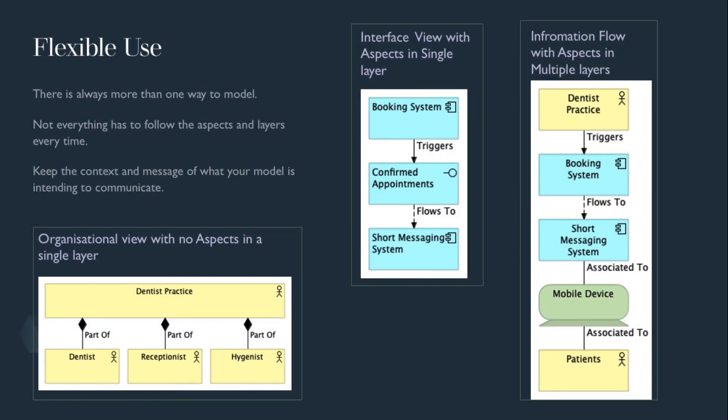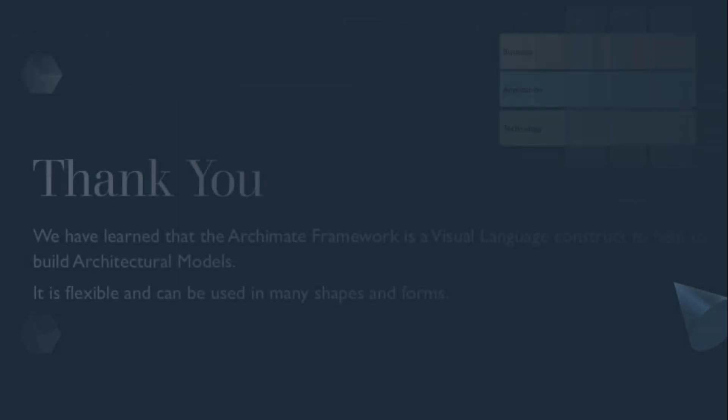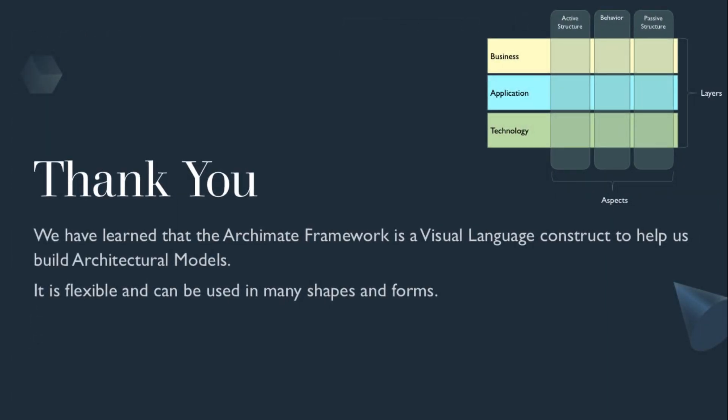And finally, there's always more than one way to model. Keep the context and message of what your model is intending to communicate. Not everything has to follow the aspects and layers. So that concludes our five-minute guide to the ArchiMate framework. In this session, we have learned that the ArchiMate framework is a visual language construct to help us build architectural models. It is flexible and can be used in many shapes and forms. Hopefully this session has brought you some value and you might tune in to future sessions.